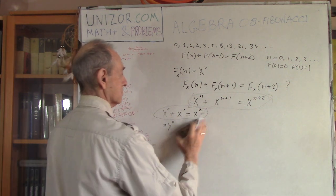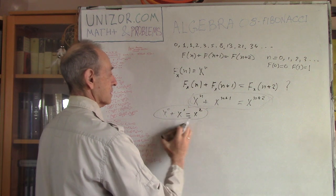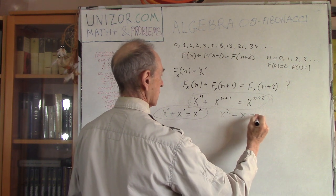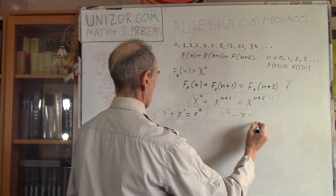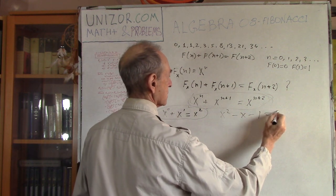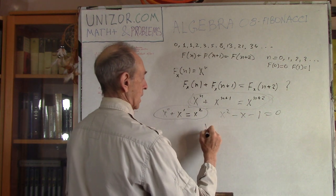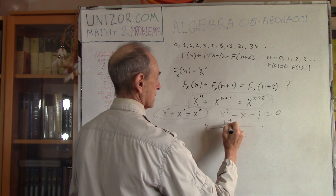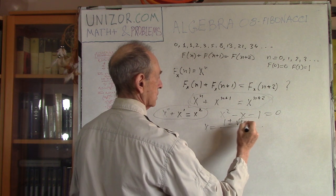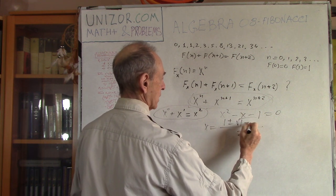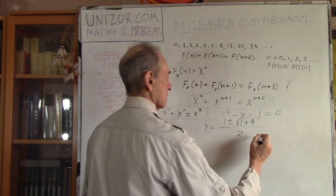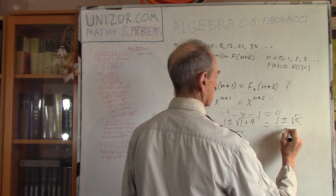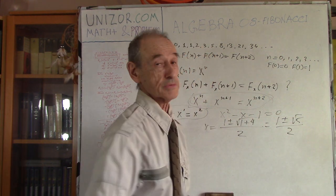Let's just do it — it's a quadratic equation, we can certainly solve it. Putting everything to one side: x^2 - x - 1 = 0. Using the quadratic formula, x = (1 ± √5) / 2. So I found two different values: x1 and x2.